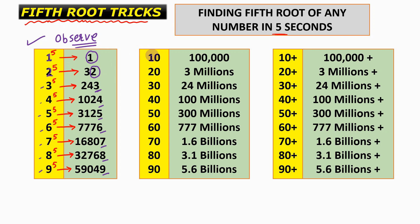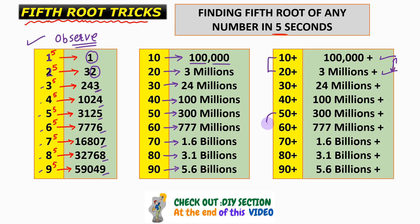The second thing we need to observe is that 10 to the power 5 equals 100,000; 20 to the power 5 is approximately 3 million; 30 to the power 5 is approximately 24 million. So the fifth power of any number between 10 and 20 lies between 100,000 and 3 million. Any number between 50 and 60 raised to the power 5 gives a value between 300 million and 777 million, and any number between 80 and 90 gives a result between 3.1 billion and 5.6 billion.